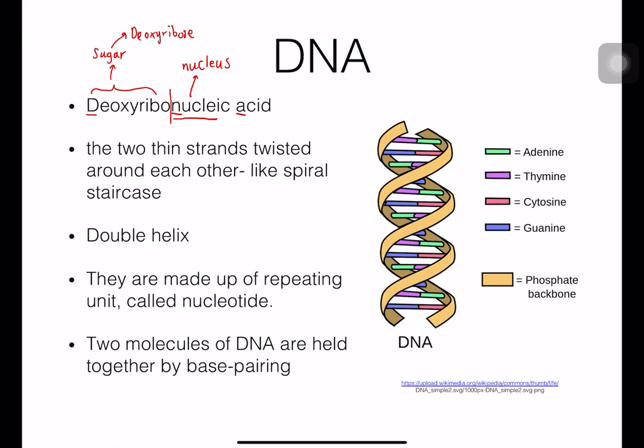DNA is an acid you can see inside the nucleus, composed of deoxyribose. The structure of DNA is composed of two strands — a first strand and a second strand — and they twist around each other. We call this a helix, and since there are two, we call the structure a double helix. It is spiral-shaped, like a spiral staircase.